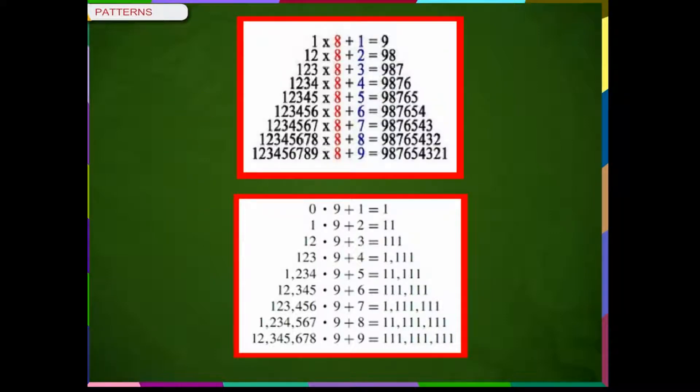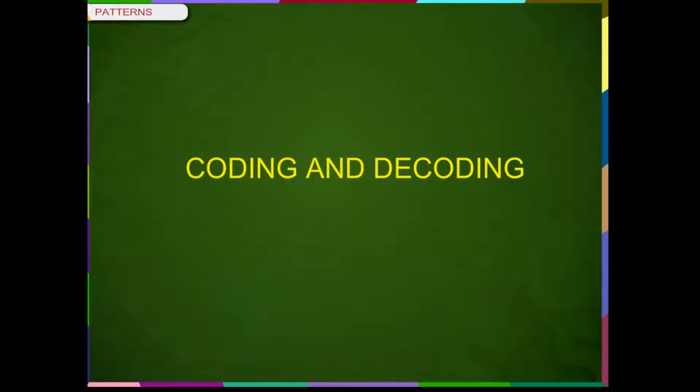Let us see some interesting number patterns. Observe the patterns on the screen. Coding and Decoding: You can make secret codes by representing numbers with alphabets. For instance, we can assign the following values.